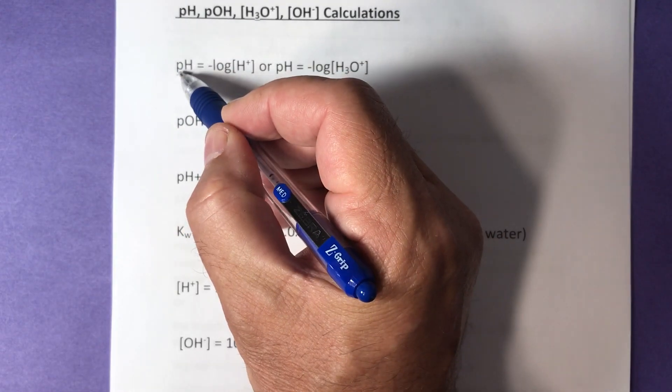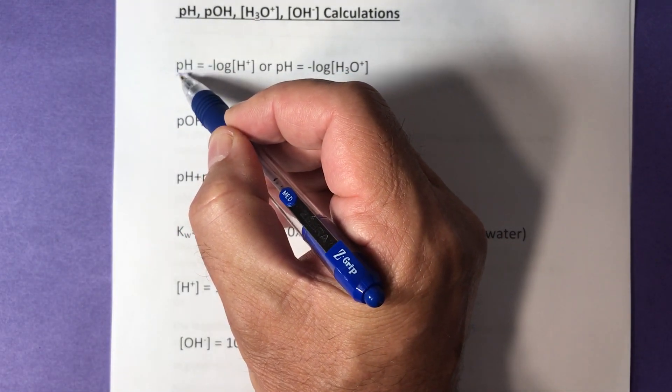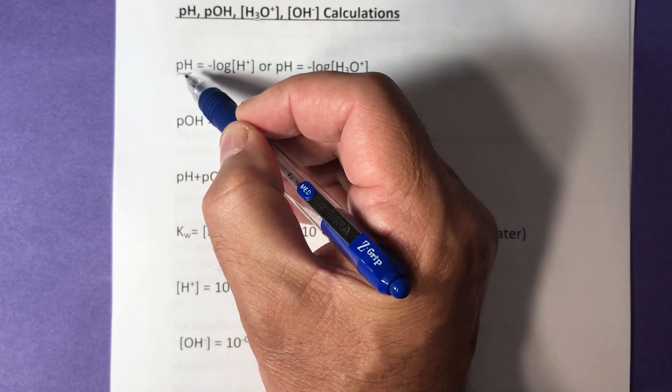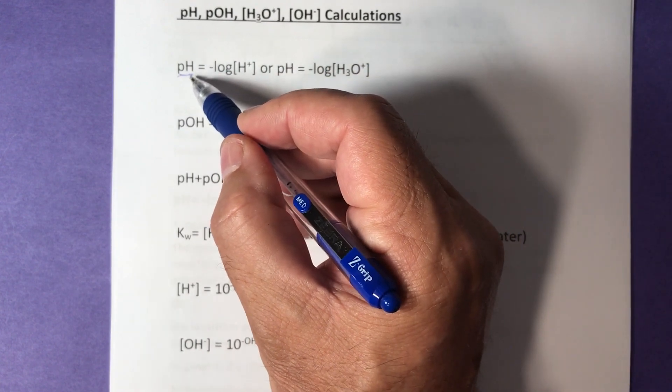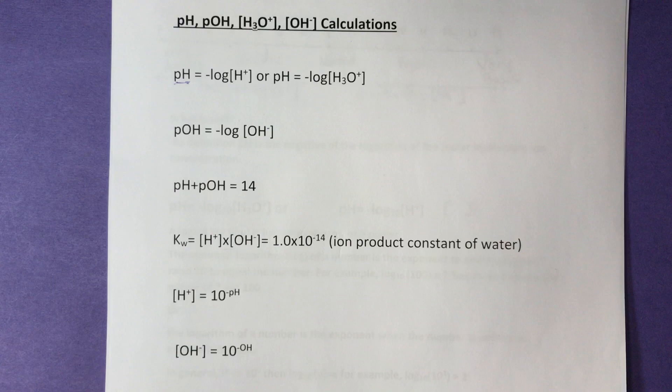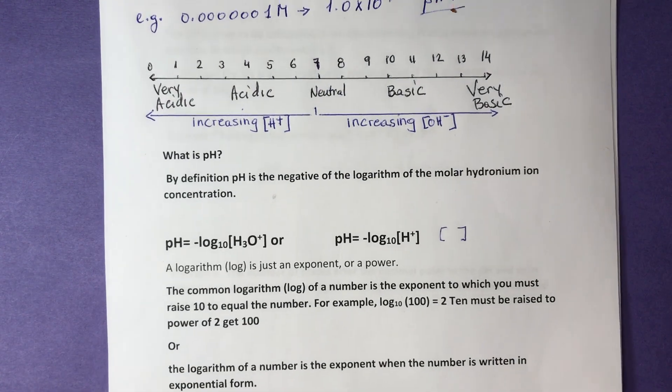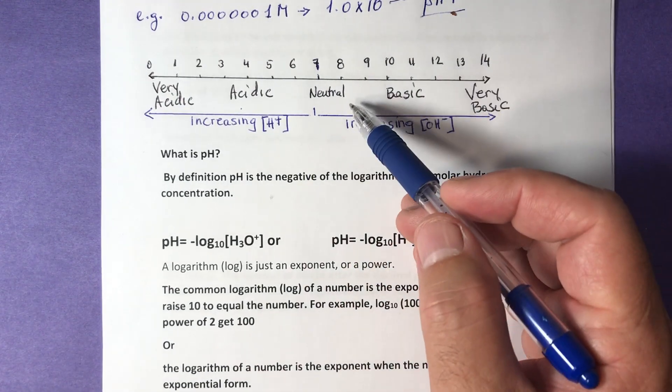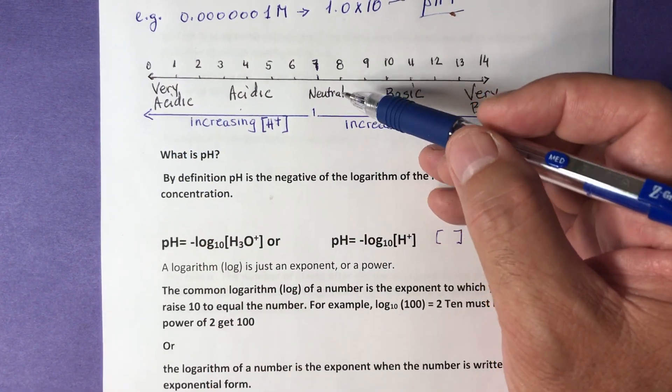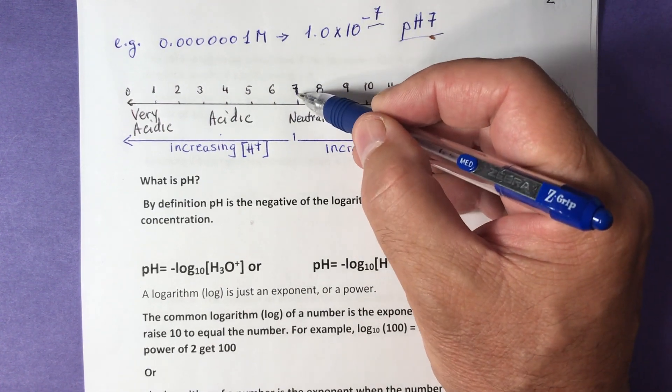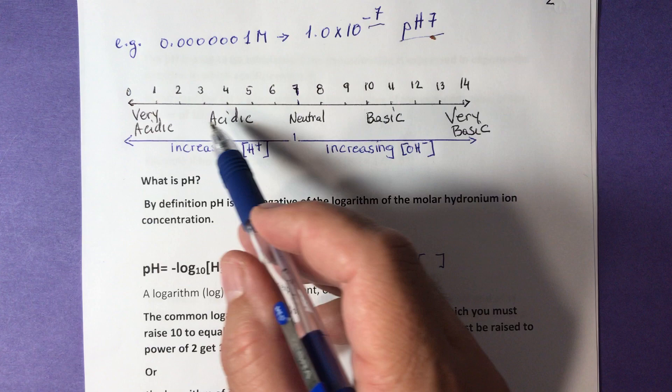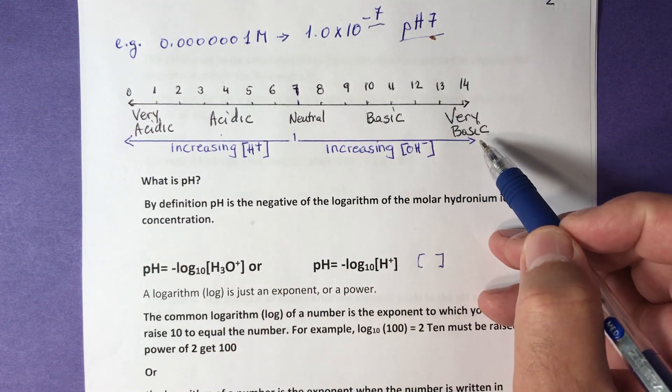pH is a numerical value without units. Lowercase p stands for the word power. The power referred to is the exponential power. H stands for the concentration of hydrogen ions measured in moles per liter. You are probably familiar with the pH scale, which runs from 0 to 14, with neutral substances in the middle at pH 7, acidic and very acidic to the left, and basic and very basic to the right.